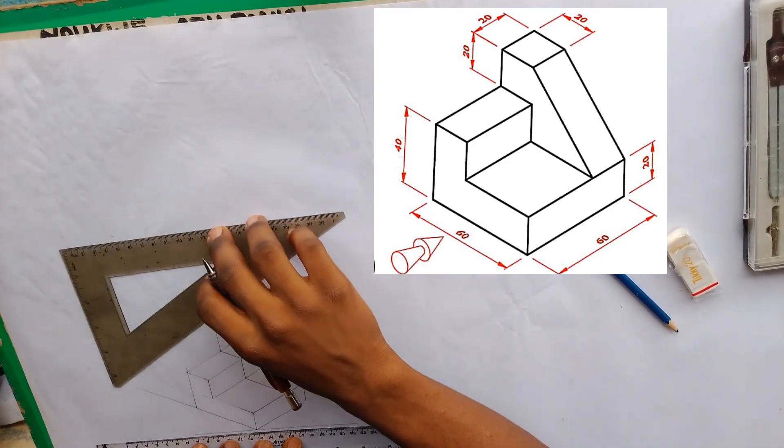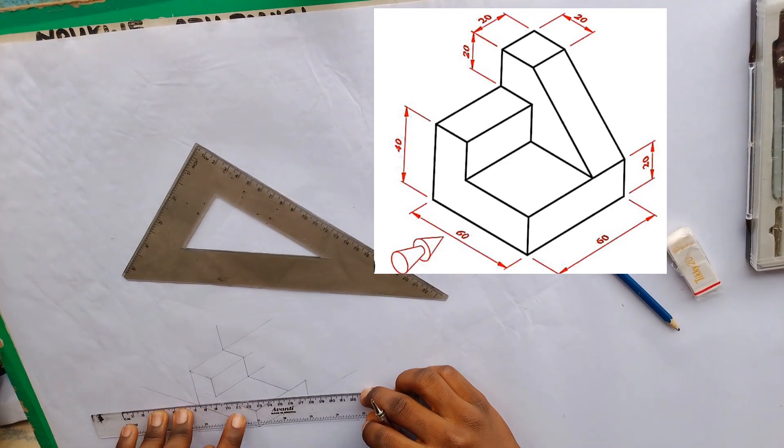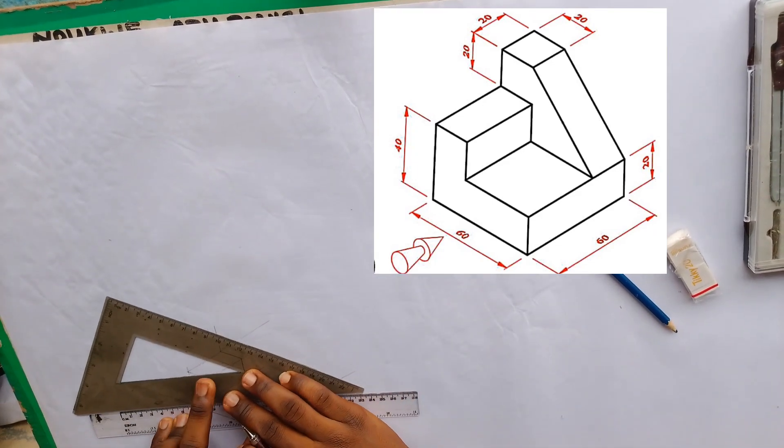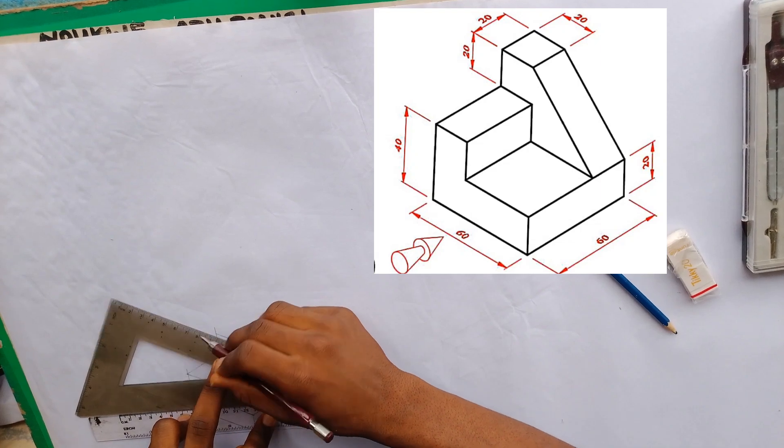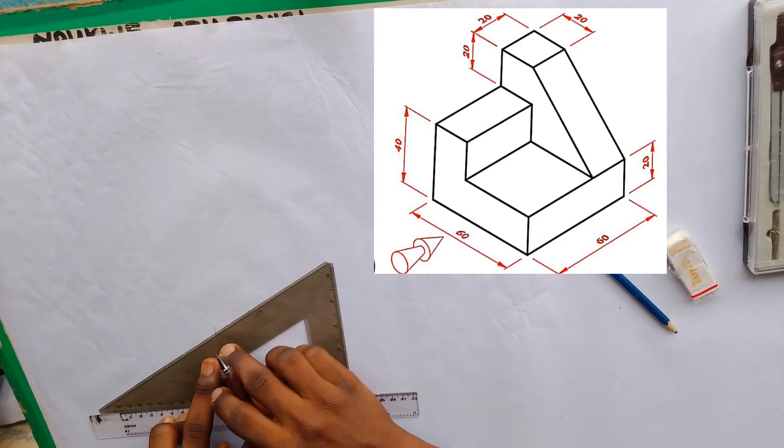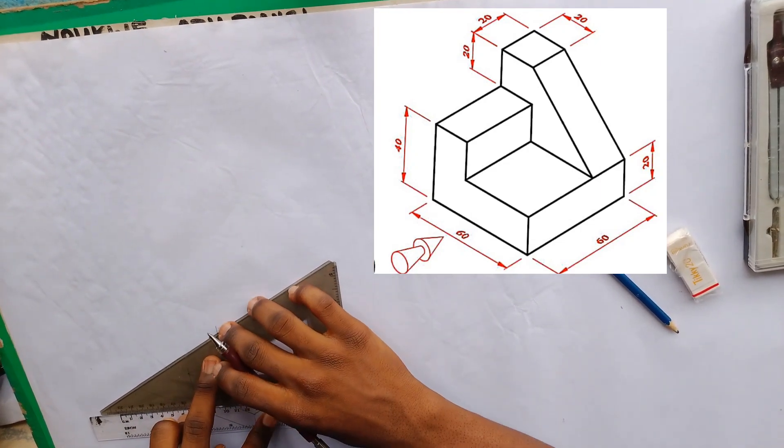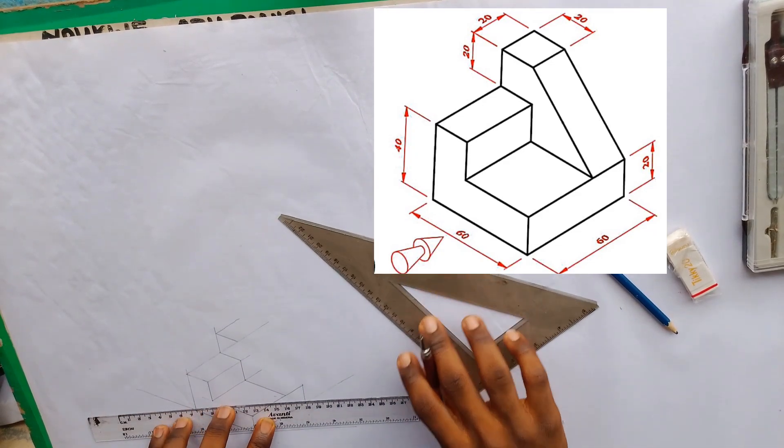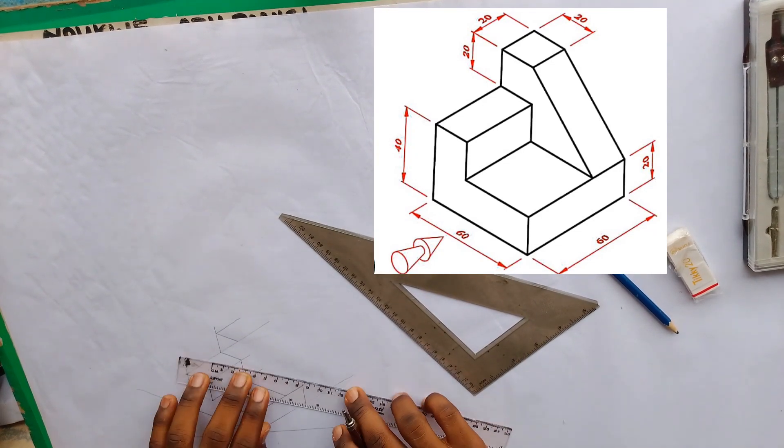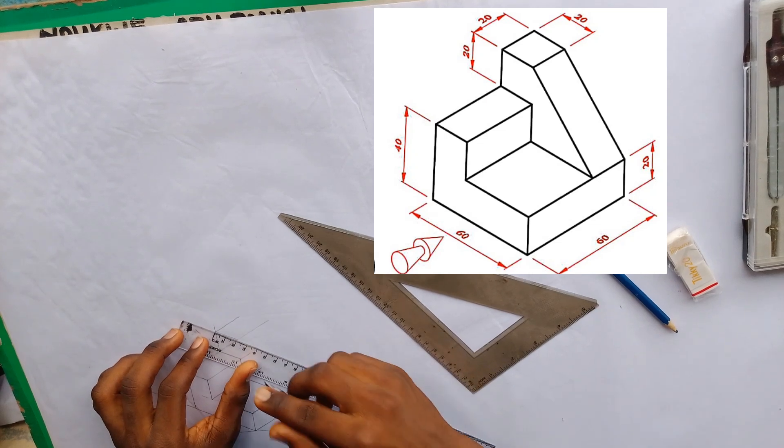We're going to draw two extra lines from this point. And both lines are 20 millimeters long.